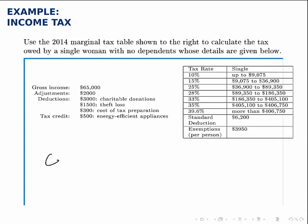We start with the gross income of $65,000. From this income, we subtract adjustments, exemptions, and deductions — those are the three categories of things that get subtracted. The adjustments are straightforward; we know that there's $2,000 in adjustments, so we subtract off $2,000 from the gross income.